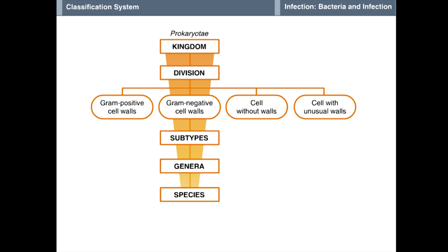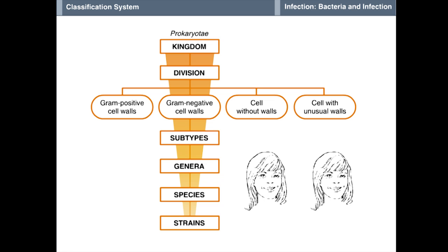In contrast, bacteria within a species are as similar to one another as one human is similar to another human. Finally, some bacterial species may be divided further into strains that share a particular characteristic that is not common to the rest of the species. In clinical medicine, the shared characteristic that defines a particular strain is often resistance to an antibiotic, to which the species was once susceptible.